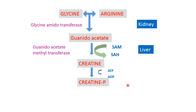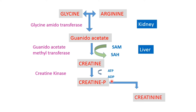Creatine phosphate is the immediate source of energy for muscle contraction. During muscle contraction, energy is first derived from the hydrolysis of ATP, and after that there is regeneration of ATP by the hydrolysis of creatine phosphate stored in the muscle. That particular reaction is called Lohmann's reaction. After that, creatine phosphate is converted to its anhydride end product creatinine non-enzymatically and spontaneously.